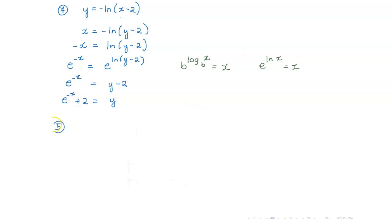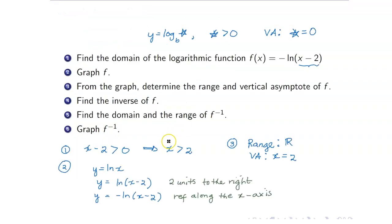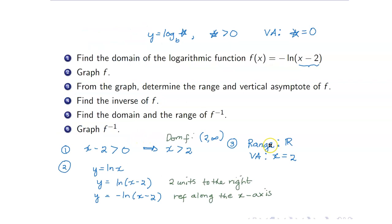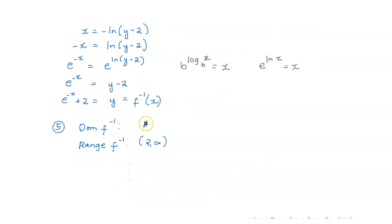Therefore, y equals e to the negative x plus 2. For the domain and range of f inverse, recall that the domain of f is x greater than 2 (that is, 2 to infinity) and the range of f is the set of all reals. So for f inverse, the domain and range are just interchanged: the domain of f inverse is the set of all real numbers, and the range of f inverse is 2 to infinity.